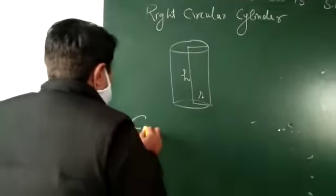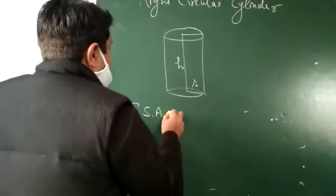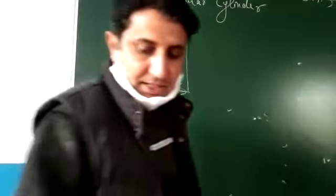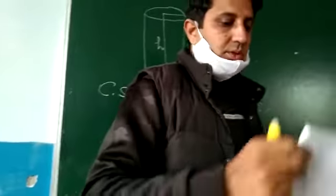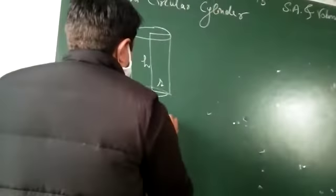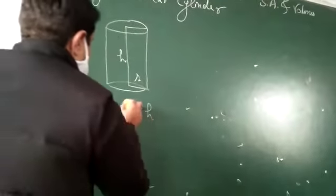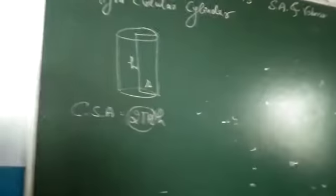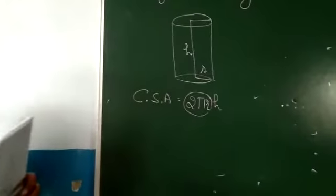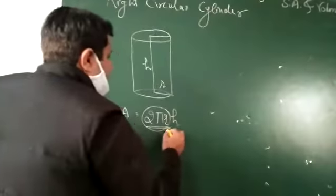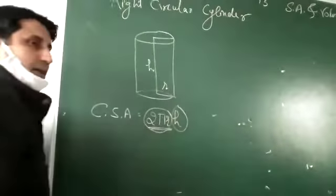Curved surface area. What will be the curved surface area? 2πrh. 2πrh. This formula belongs to circumference of the circle, multiplied by height. Right.